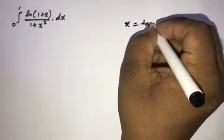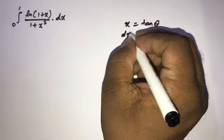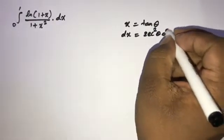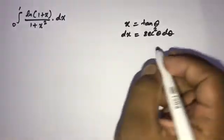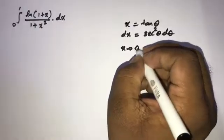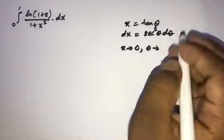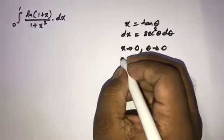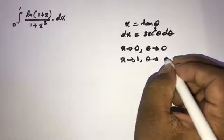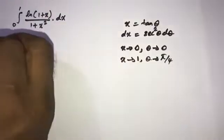Differentiating with respect to x, dx is equal to sec²(θ) dθ. Now we want to change the limits. For the lower limit, x approaches zero so θ approaches zero, and for the upper limit, when x approaches one so θ approaches π/4.